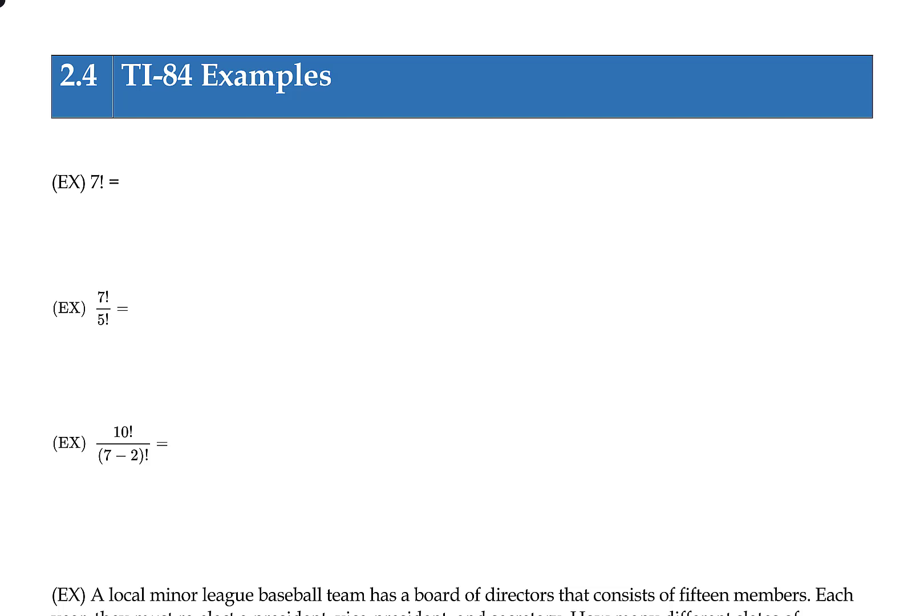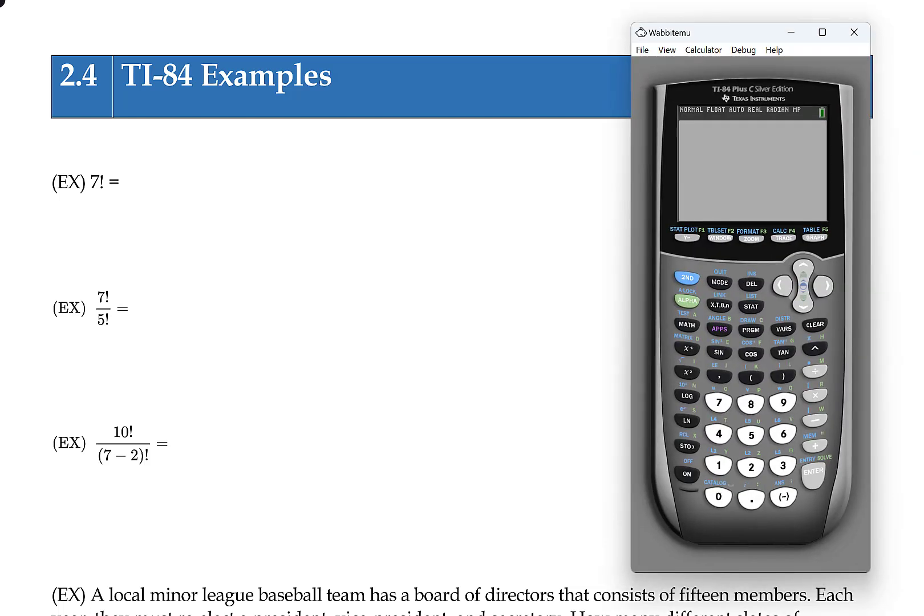So, factorials, beginning there. The calculator can do factorials for you, and obviously you could literally type in for this first example 7 times 6 times 5 times 4, and so forth until you get down to 1. But it has a built-in feature for factorials, so if you type in the number first, so put the 7 down, and then go to the math button, and over here to prob. So come over to prob,